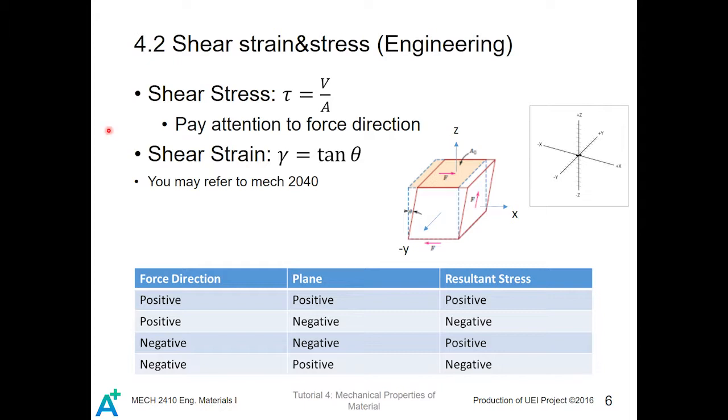Shear strain is defined as gamma, the shear strain, is equal to tangent theta. Theta is the angle, which is shown here. Here is the angle. The deformed angle of the material under the shear force. And you may refer the definition of shear stress and shear strain to the definition for the Mechan 2040.